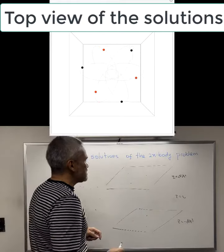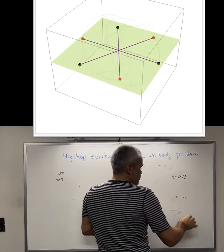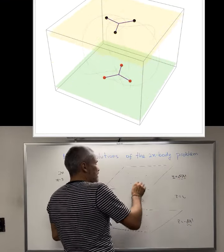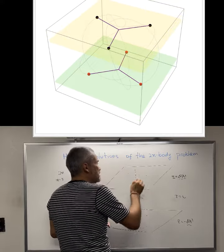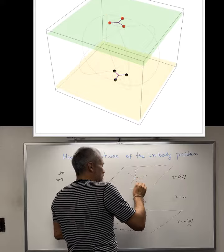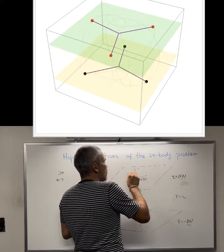Then the motion is described by three functions. The function d of t, the function r of t. We can think that this is the z-axis, then the function r of t is this distance. This distance is the same for all the bodies.